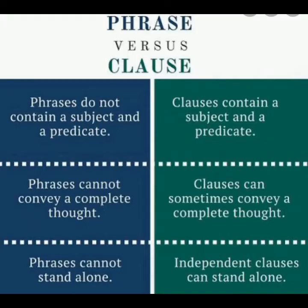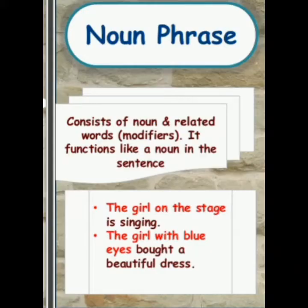Let's quickly revise some of the different kinds of phrases. Noun phrase: a noun plus words that modify a noun performs the work of a noun in a sentence. For example, "the girl on the stage is singing" and "the girl with blue eyes bought a beautiful dress."